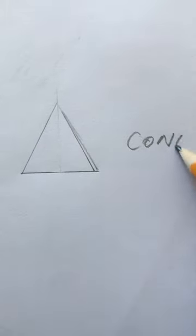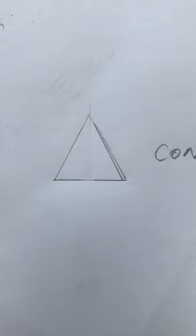So for the last part, we want to turn the triangle into a cone. We want it to look like an upside down ice cream cone.